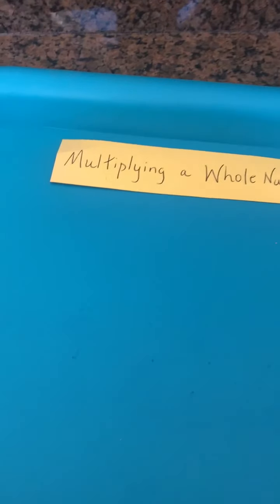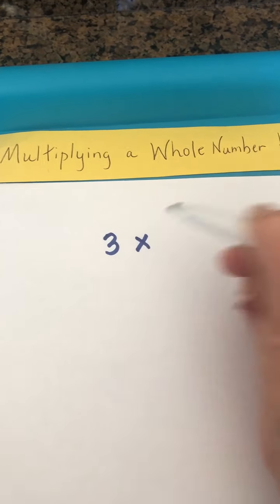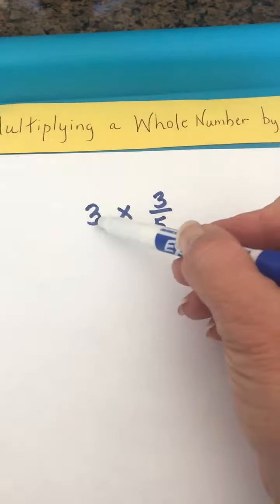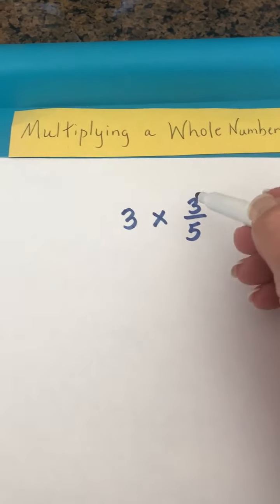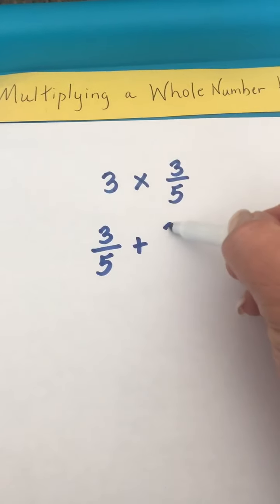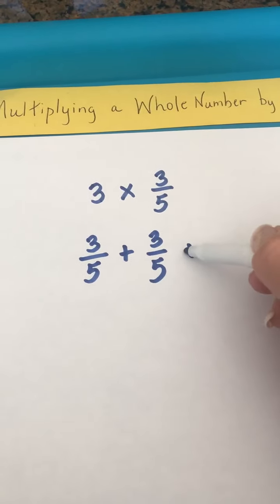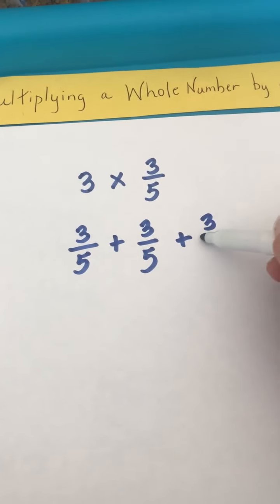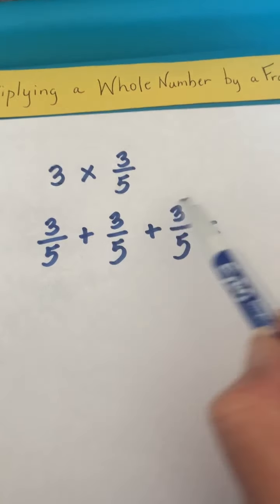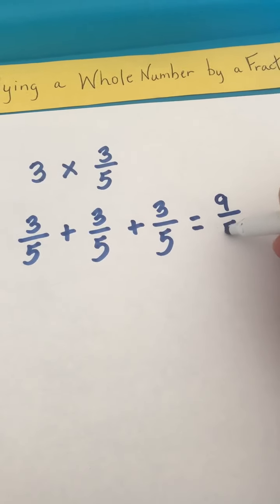Let's look at another example where we change from using a unit fraction — which has a one in the numerator — to see what happens. Let's look at three groups of three-fifths. We need three groups, and our fraction is three-fifths. So using repeated addition: three-fifths, a second group of three-fifths, and then my third group of three-fifths. Using what we know about addition, three plus three plus three gives us nine-fifths.